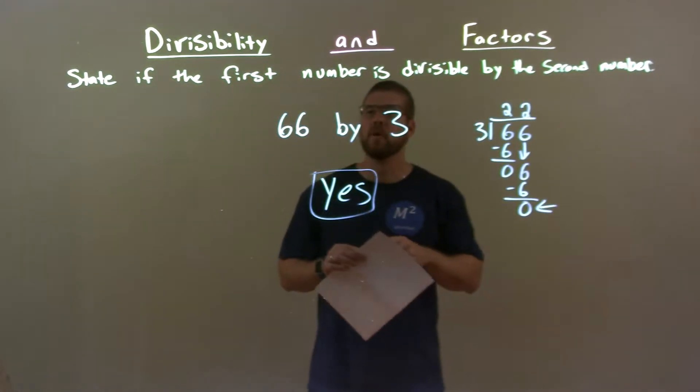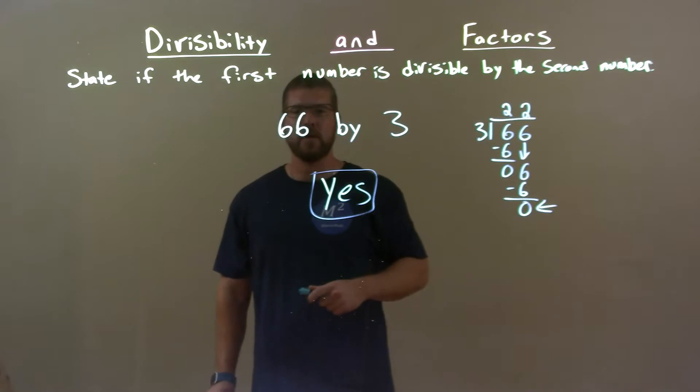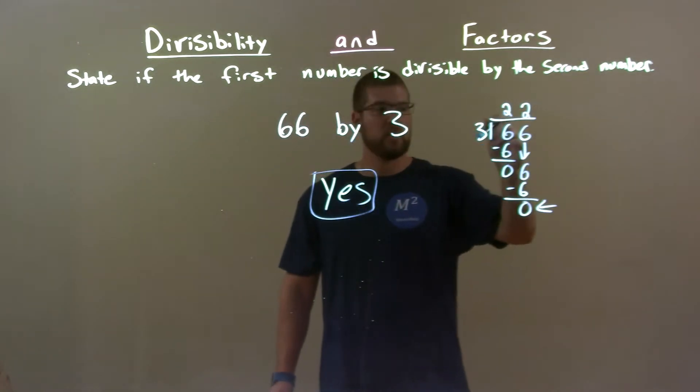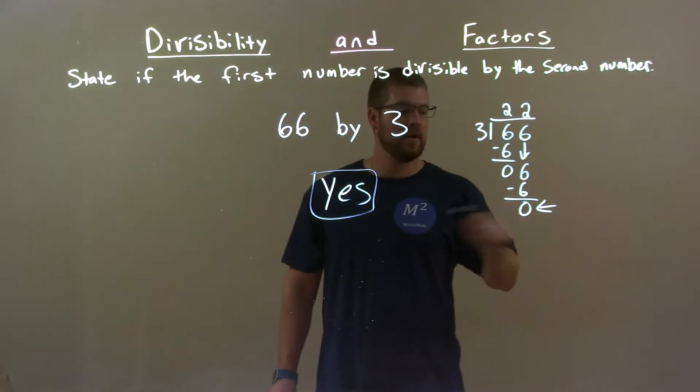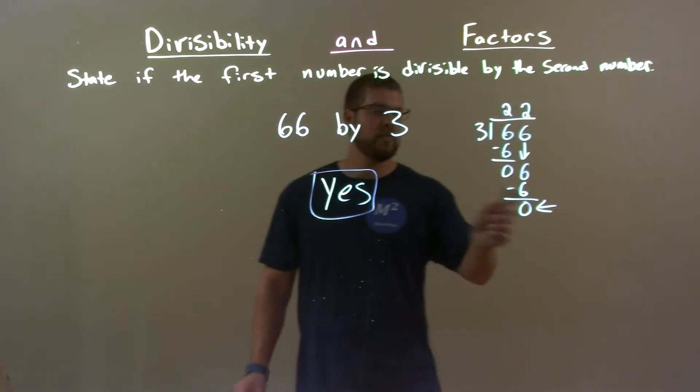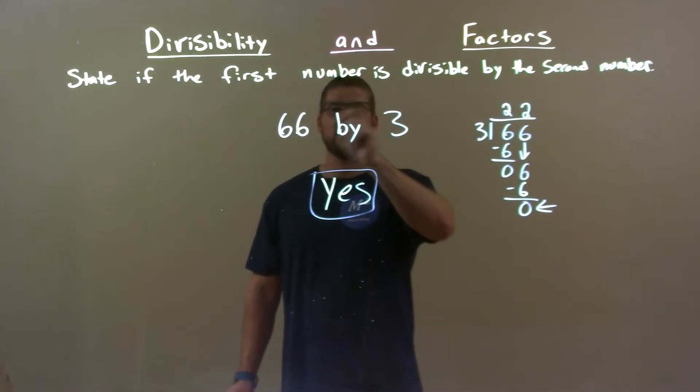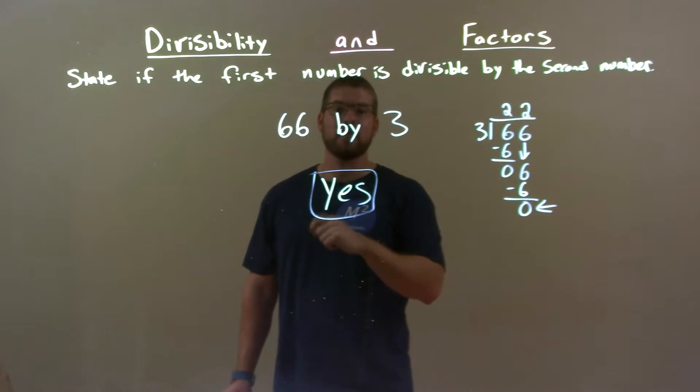Quick recap. We're given 66 divisible by 3. We check that by doing long division. 3 into 66. Since we have no remainder, that means 66 is divisible by 3. So, our answer is yes.